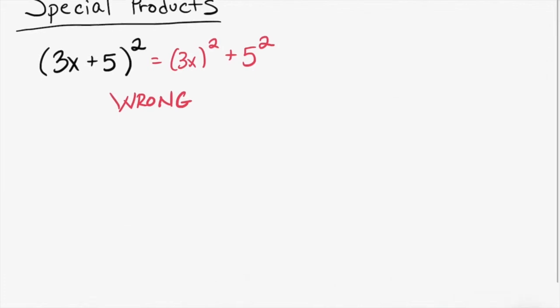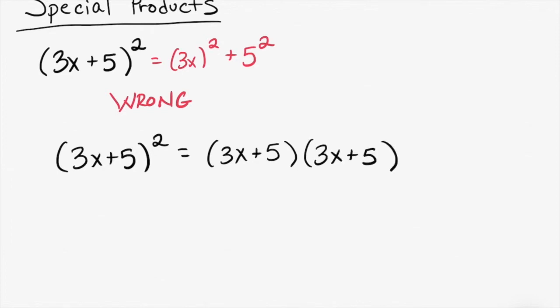Instead, when something is squared, what does that mean to do? It means multiply it by itself. So 3x plus 5 squared means 3x plus 5 times 3x plus 5. We did these kind of problems all day yesterday. This is a binomial times a binomial. It's the one and only time that the FOIL method would be appropriate if you are a fan of FOIL.